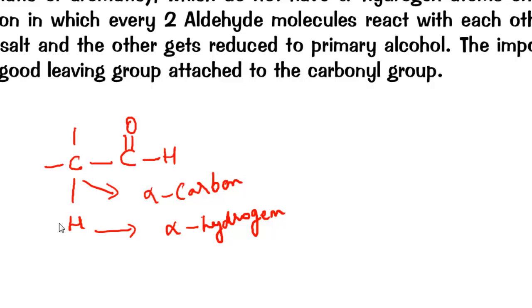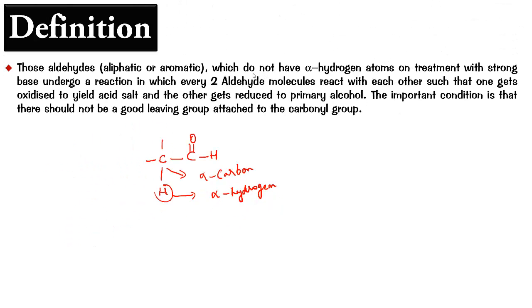So this is what we should not be having. The definition says not have alpha hydrogen atoms. So this is a very important condition here. And another thing it says is, we use strong base. And one aldehyde becomes acid salt, other becomes primary alcohol.